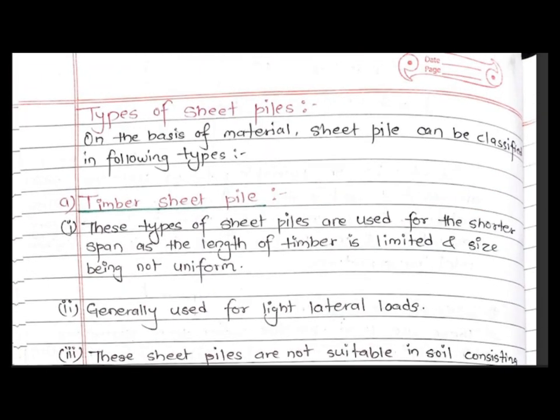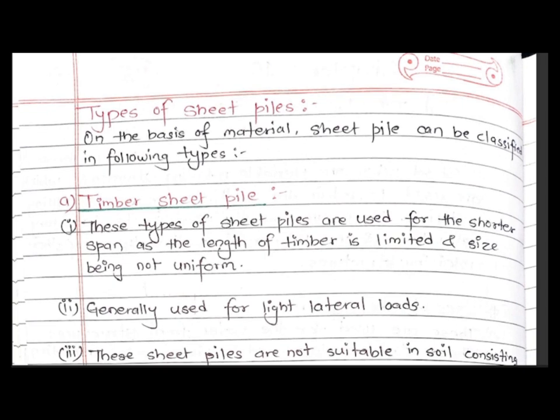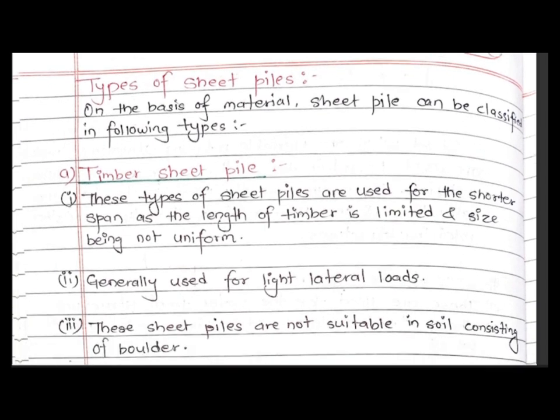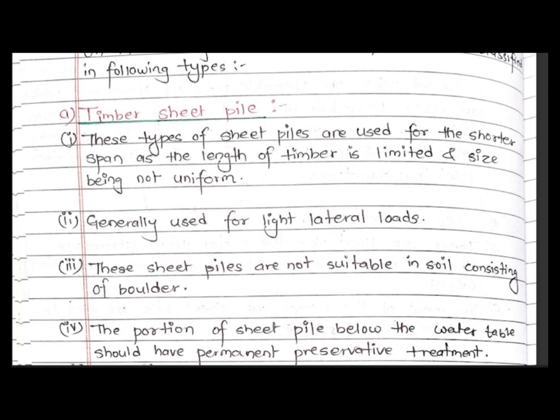Types of sheet pile based on material: First is timber sheet pile. These types of sheet piles are used for shorter spans as the length of timber is limited and size is not uniform. Generally used for light lateral loads.